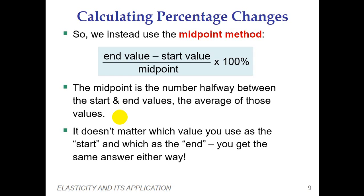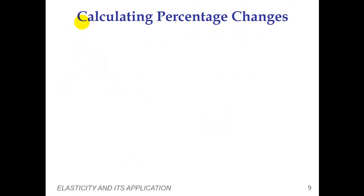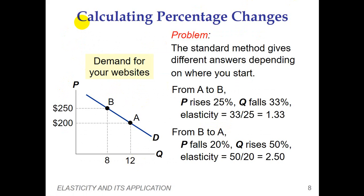The midpoint method uses a number halfway between the start value and end value — the average of those values. It does not matter which value you use as the start and which as the end; you get the same answer either way. With the midpoint formula applied to prices, we can see how it overcomes the problem of the standard formula.